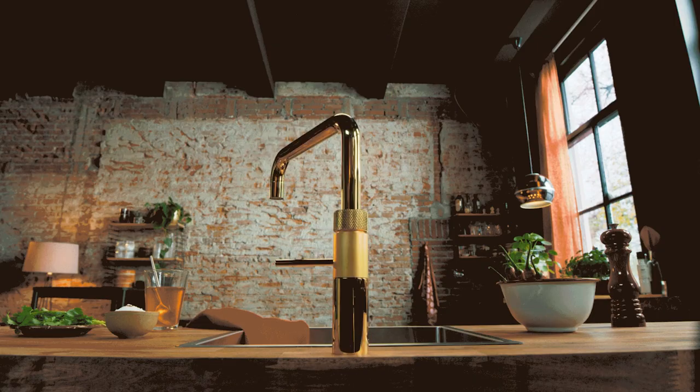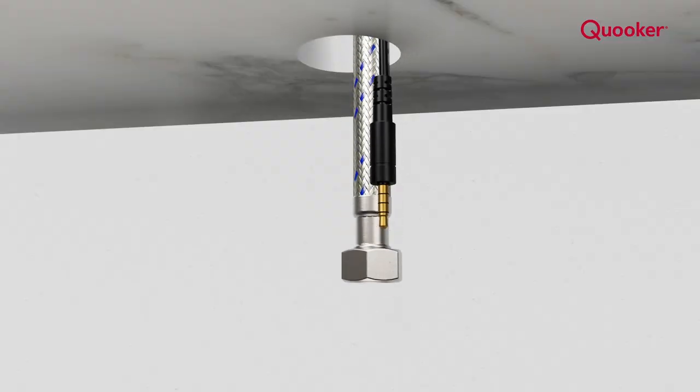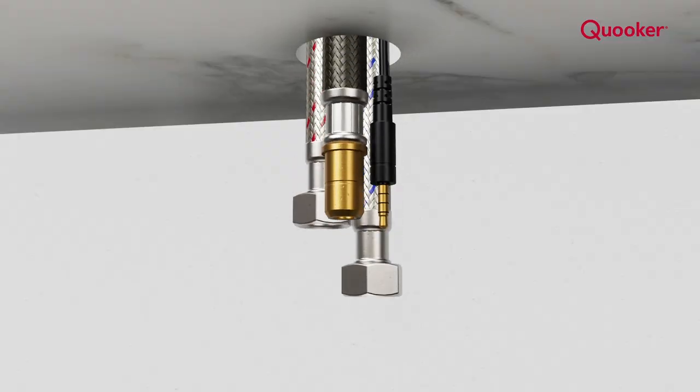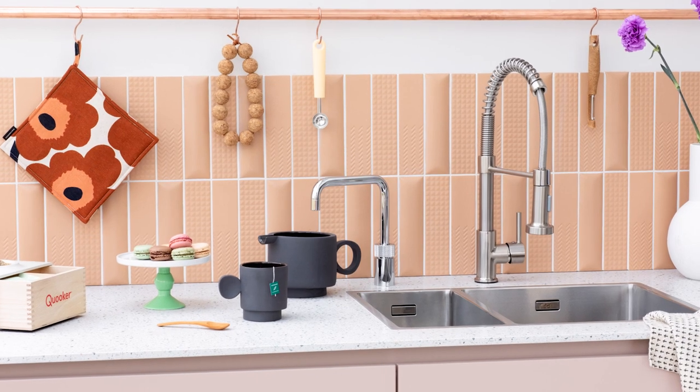For a flex, fusion or mixer tap, there needs to be a 35 millimetre hole on the work surface. The Nordic single tap requires a hole of 32 millimetres.